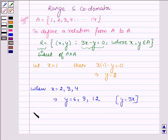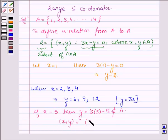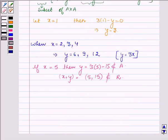Now, if we take X equals 5, then Y will be equal to 3 into 5 which equals 15, which does not belong to the set A. Hence, X equals 5, Y equals 15 does not belong to the relation R.